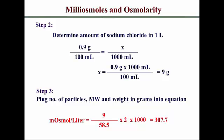Since we know that a 0.9% solution of NaCl is isotonic, this number actually makes more sense. Because in bodily fluids, the osmolarity is about 300 milliosmoles per liter. I hope this helped you have a better understanding of how to calculate milliosmoles and osmolarity. If you have any questions, just send me an email or check out the link below.